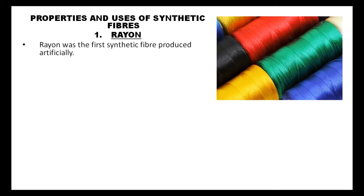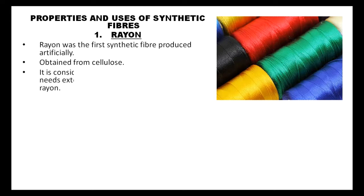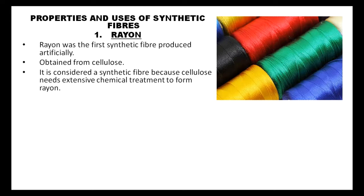It is obtained from cellulose which is extracted from wood pulp. Though Rayon is obtained from a natural polymer, it is considered as a synthetic fiber because cellulose needs extensive chemical treatment to form Rayon.